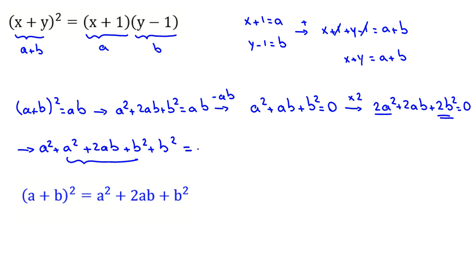And say it is a squared—the first one a squared—by applying this identity, a plus b squared. This one will be b squared equals zero.